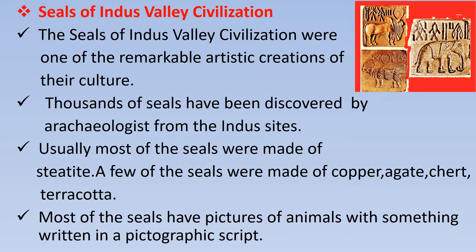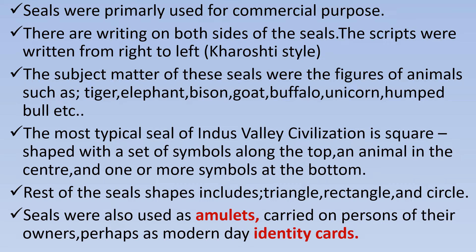The seals of Indus Valley Civilization were one of the remarkable artistic creations of their culture. Thousands of seals have been discovered by archaeologists from the Indus sites. Usually, most of the seals were made of steatite. A few of the seals were made of copper, ivory, shell and terracotta. Most of the seals have pictures of animals with something written in a pictographic script. Seals were primarily used for commercial purposes. There is writing on both sides of the seals. The script was written from right to left.